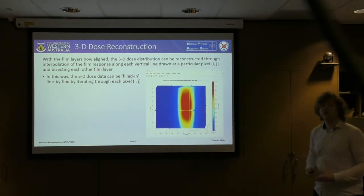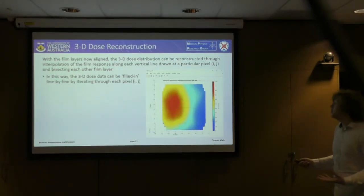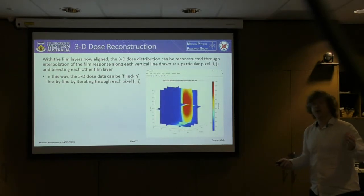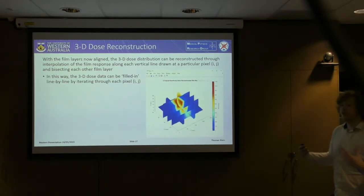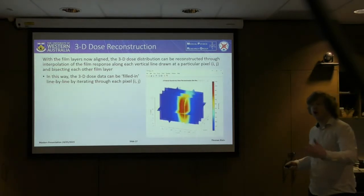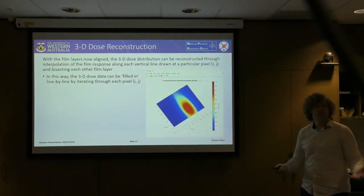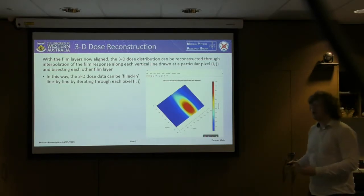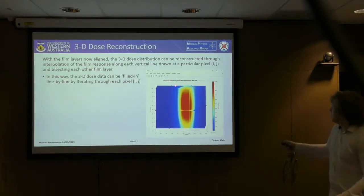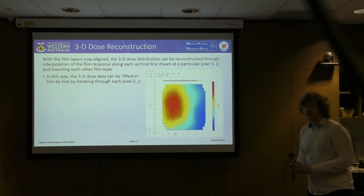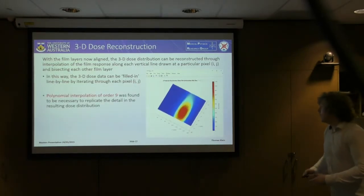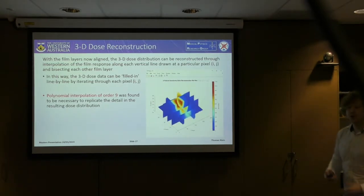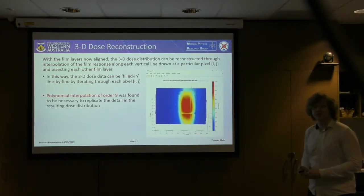With alignment complete, we reconstructed the entire 3D dose distribution. This was achieved by looking at a particular pixel in one film layer and drawing a vertical line through that same pixel in every other film layer, providing 15 data points for interpolation along that line. Repeating for every pixel fills in the entire 3D dose distribution. This dose matrix contains approximately 15 million data points. We found that polynomial interpolation of order 9 was necessary to recreate accuracy in the resulting dose distribution.